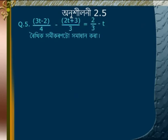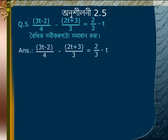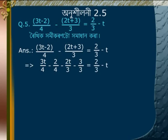Problem 5: Solve (3t minus 2)/4 minus (2t plus 3)/3 is equal to 2/3 minus t. Expanding brackets: 3t/4 minus 2/4 minus 2t/3 minus 3/3 is equal to 2/3 minus t.